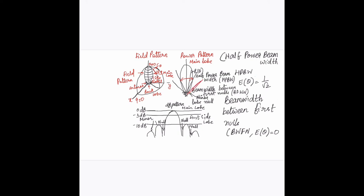The first null is the region just after the main lobe where you have no field — between the main lobe and the side lobe. Finding this angle gives the beam width between first nulls, obtained by equating the field pattern equal to zero. The field can also be shown in a rectangular coordinate system. Expanding the main lobe and side lobes in rectangular form, the 3 dB point gives the half-power beam width, and wherever there is no radiation that gives the nulls.